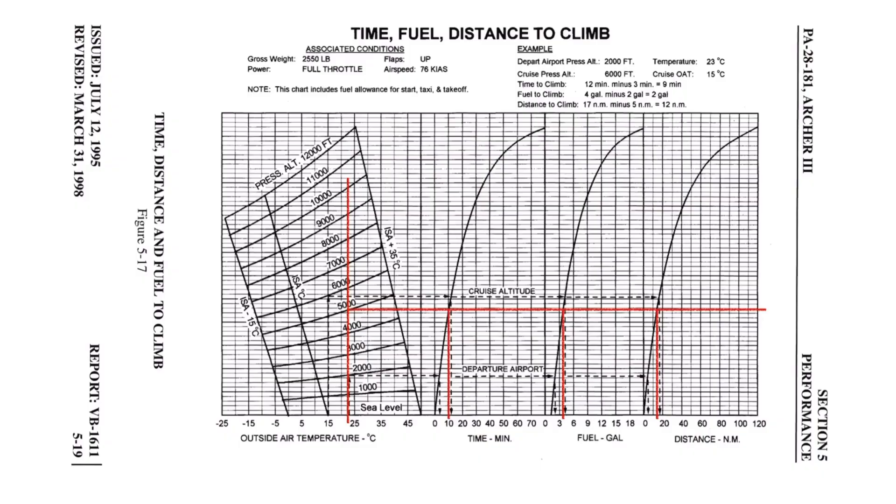But we're not done yet. Remember, this is the time, fuel, and distance calculation from sea level to cruise. To complete our estimations, we'll need to make the same calculations from sea level to airport altitude, then subtract those values from the original numbers to get our final answer. To find the time to climb from sea level to airport altitude, we'll use exactly the same process. Starting with where the vertical line at 22 degrees Celsius crosses the 1,000 foot pressure altitude line, draw a new horizontal line all the way to the right of the chart.